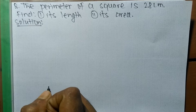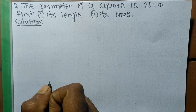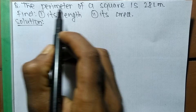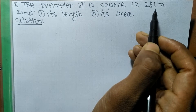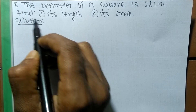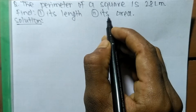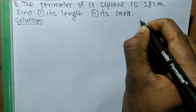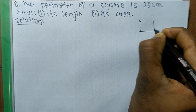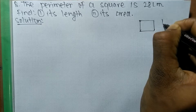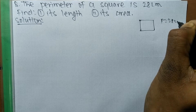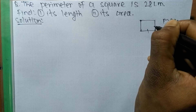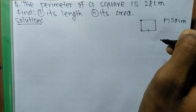Today in this video we are going to solve a word problem. The question is: the perimeter of a square is 28 centimeters — find its length and its area. Here is a square whose perimeter is 28 centimeters, and we have to find out its length and also its area.